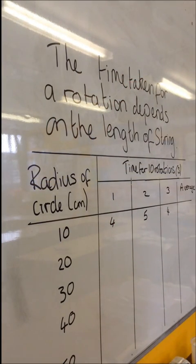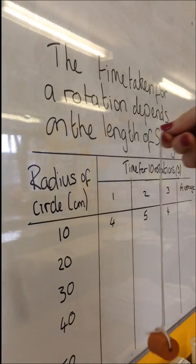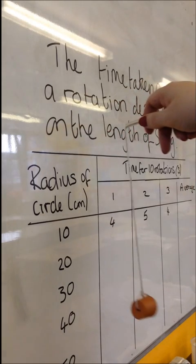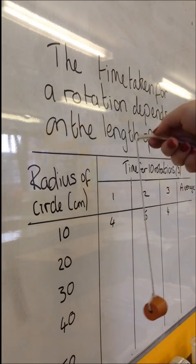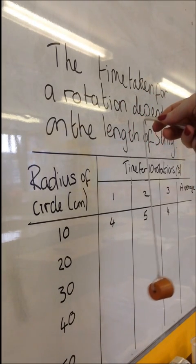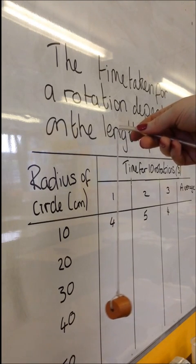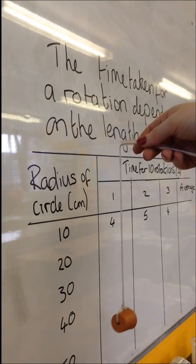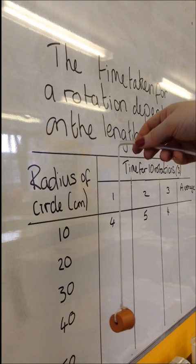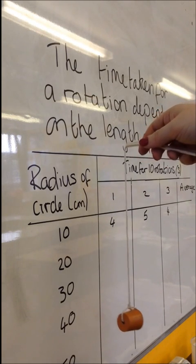And then what you need to do is, with the weight attached to the bottom and swinging freely, is swing your weight around. And it is better if you have two people to do this. You need someone to swing the weight and you need someone to count and do the timer. So we need to count the time taken for 10 rotations,